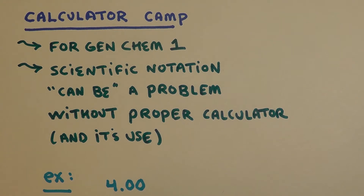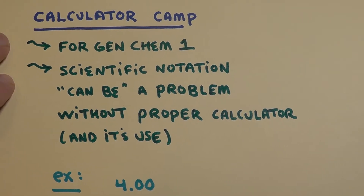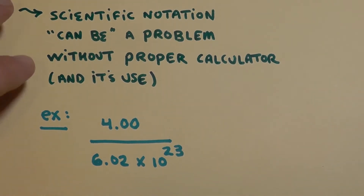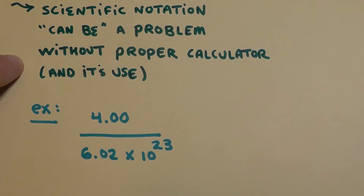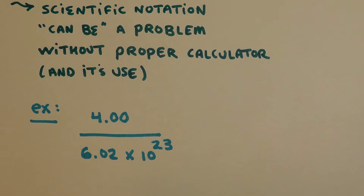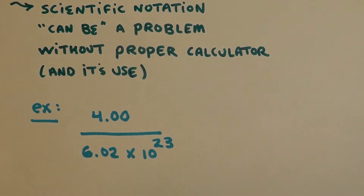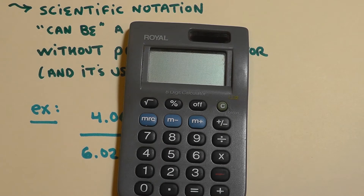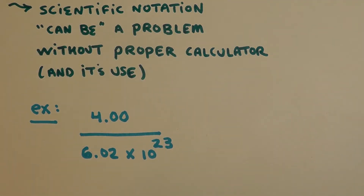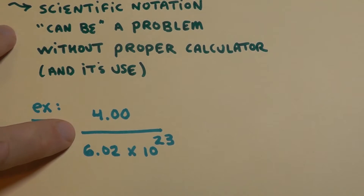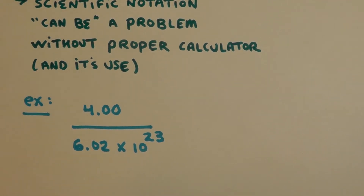So now I've got about five different calculators here. Students leave them behind and I have a ton of them in my office. We're going to do a calculation that employs scientific notation because the numbers are gigantically big or small. For example, a very common calculation: divide 4 by Avogadro's number, which is 6.02 times 10 to the 23. This would be the calculation for the mass of one helium atom — not a trivial thing.